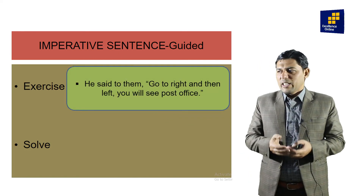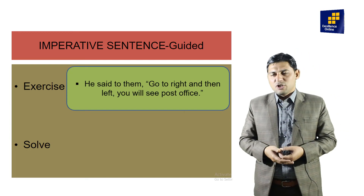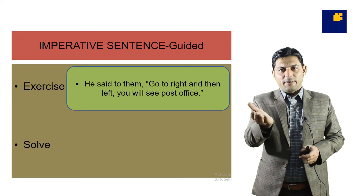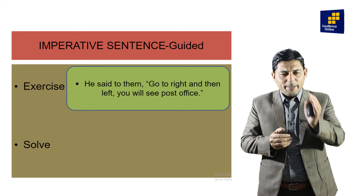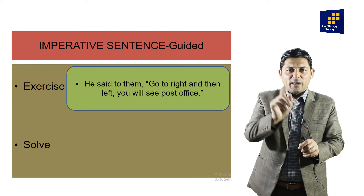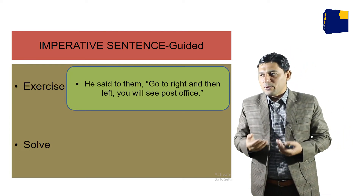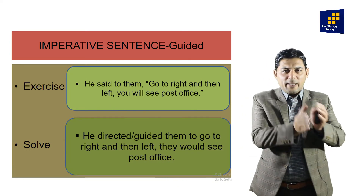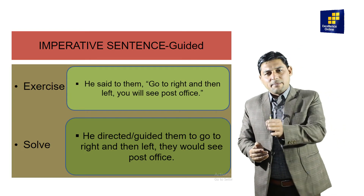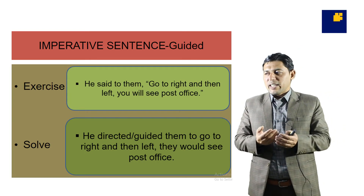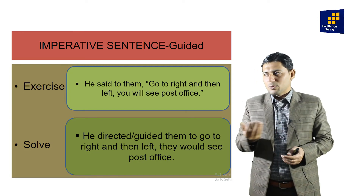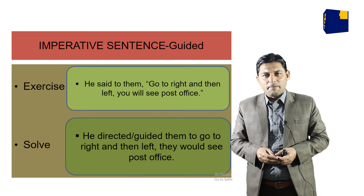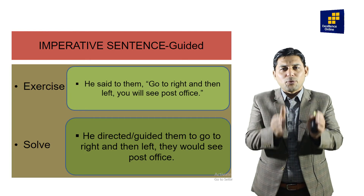Number six is the guided or directed sense. Example: 'He said to them, go to right, then left — you will see the post office.' When someone gives directions — right, left, front, back — we change 'said to' into 'directed' or 'guided.' So: 'He directed them to go to the right, then left, and told them they would see the post office.' Both 'directed' and 'guided' can be used.